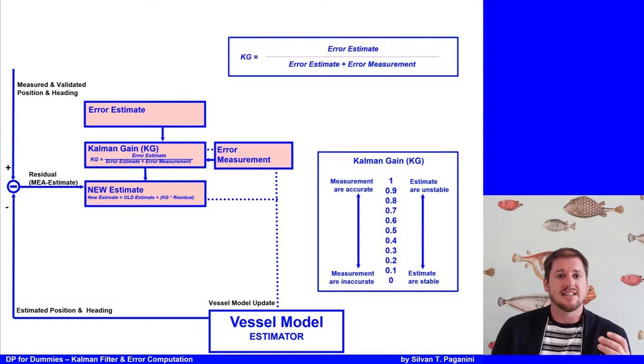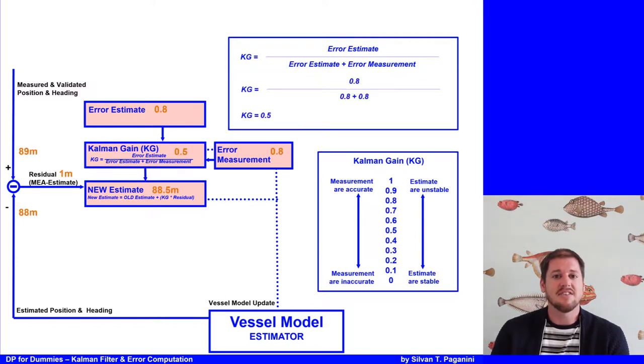If we take a lot of the difference of the measurements and estimate or just a small amount depends on the error from those two. That is why Kalman filter is such a good tool, because it uses the Kalman gain to figure out how much it trusts the measurement and how much the estimate. In our example, we have an error in the measurements of 0.8 meters and the error in the estimate of 0.8. So the Kalman gain is 0.8 divided through the sum of 0.8 plus 0.8, gives a Kalman gain of 0.5.